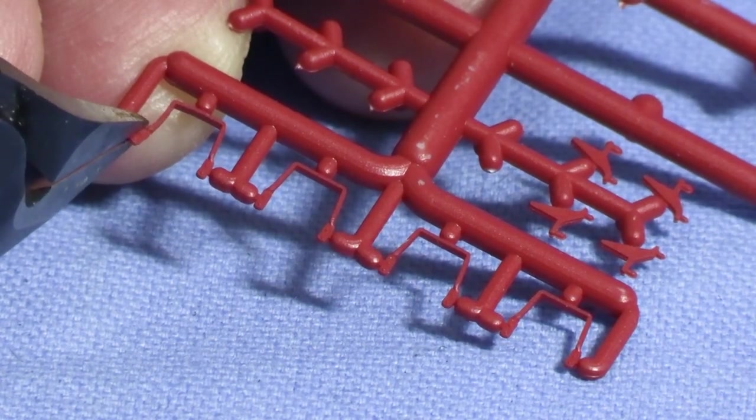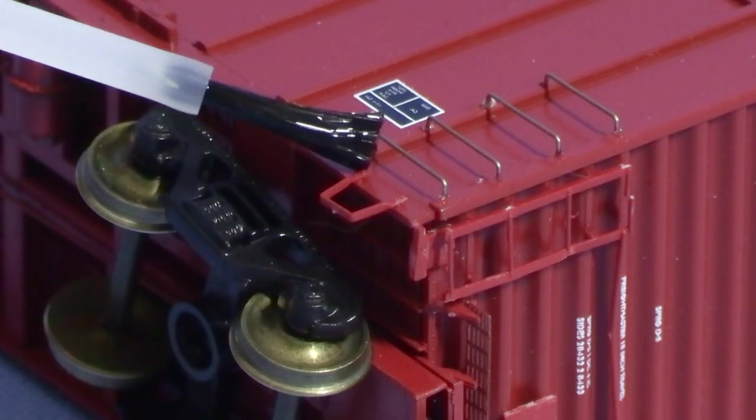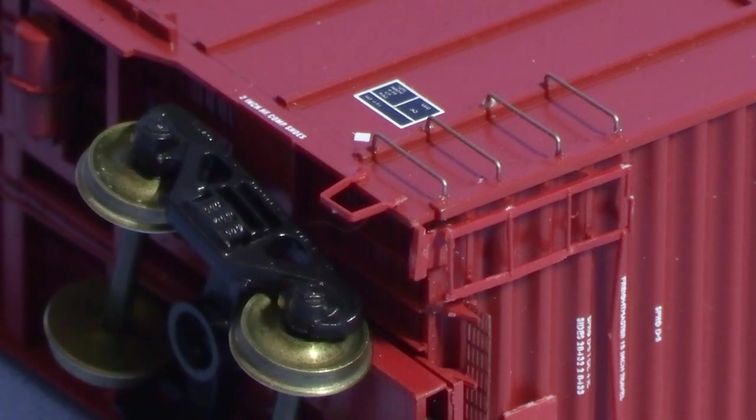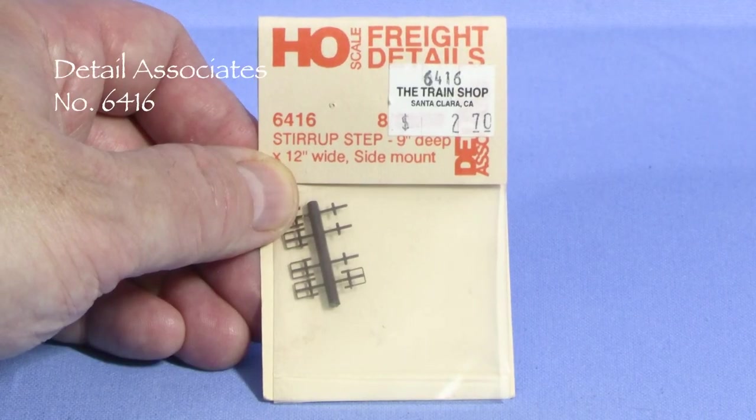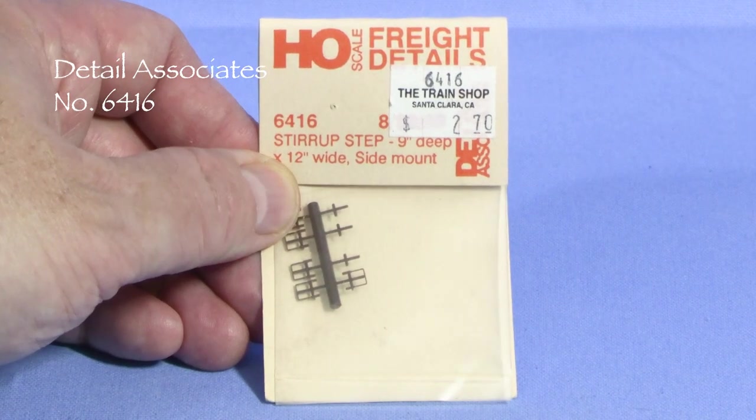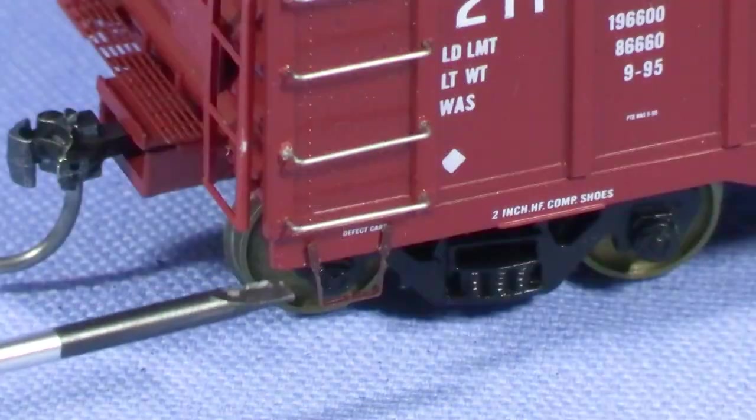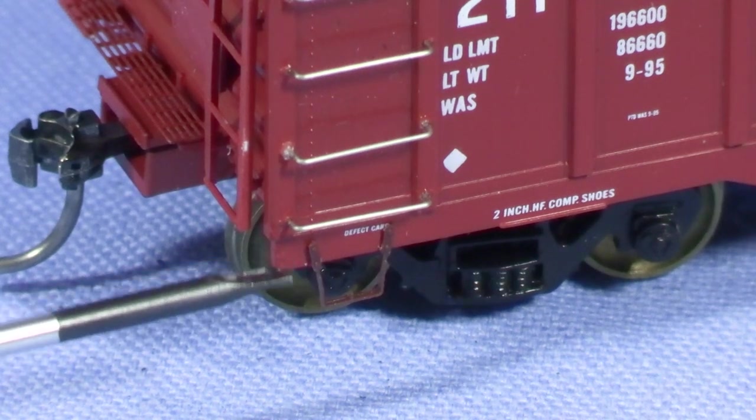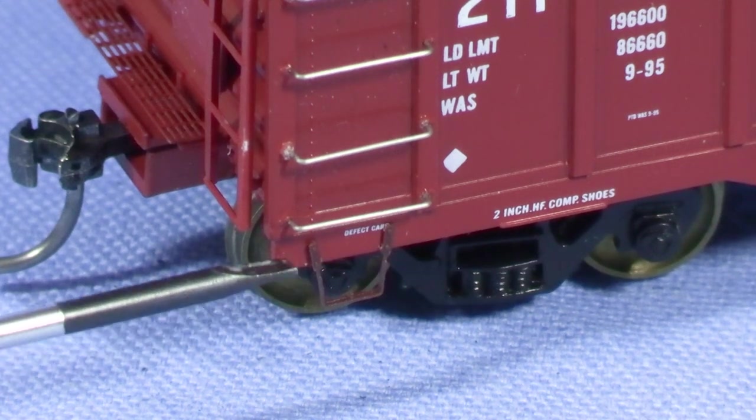I'll use the sprue cutters to cut out the stirrups. The stirrups are a little difficult to put on. I got them in the holes and then I'll secure them with some liquid styrene cement. Unfortunately, I broke one of the stirrups. The closest replacement I have is Detail Associates Part 6416. Here's the replacement stirrup and it looks pretty good other than the color, so I'll have to paint it later. I also had to use CA to glue it since it's not a styrene plastic.